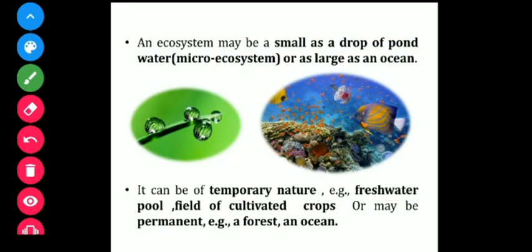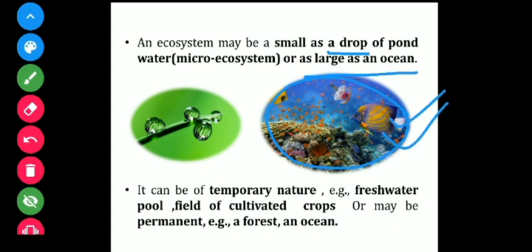The ecosystem may be small or large. Small, like a single drop of water, or large, like an ocean and forest. In the ocean, you can see lots of biodiversity — different species of fish, coral reefs, phytoplanktons, algae, and many more organisms existing in a large ecosystem.